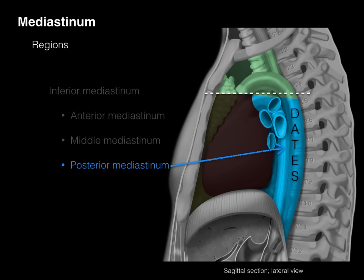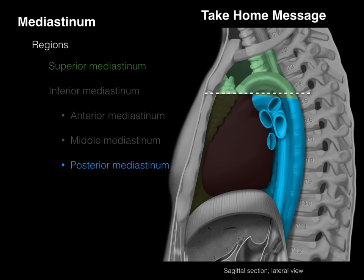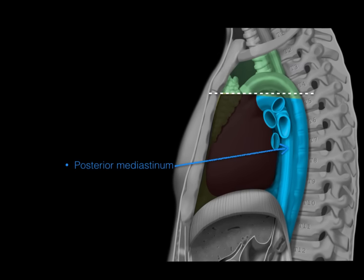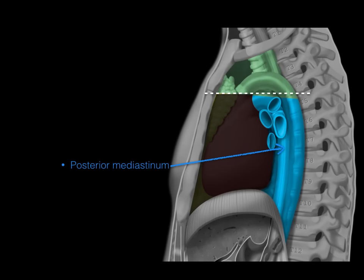The take-home message is this: the anterior mediastinum contains the thymus — I won't cover it in detail. The middle mediastinum was covered in a previous lecture. So we're going to focus on the superior mediastinum and the posterior mediastinum. Let's start with the posterior mediastinum.